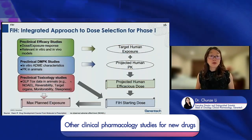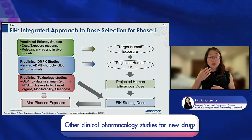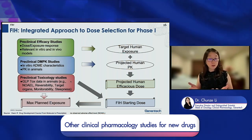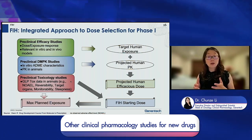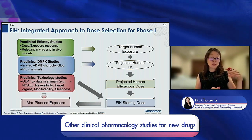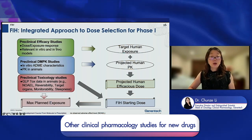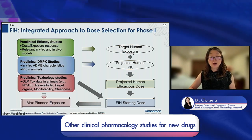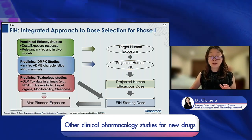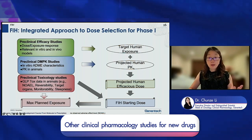Regarding dose selection overall, it's an integrated approach. There are three possible doses to think about when designing the first in-human study: the starting dose, the ballpark target human efficacy dose, and the maximum dose capped based on preclinical toxicities. We leverage preclinical efficacy studies — both in vitro and in vivo — to understand what target human exposure is needed to achieve efficacy, and combine that with projected human PK to estimate the human efficacy dose.